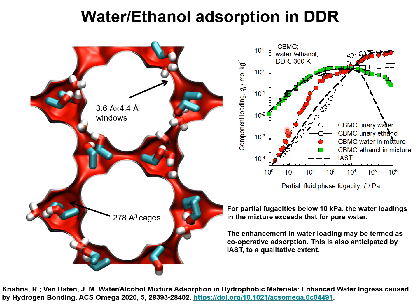The component loadings for mixture adsorption are shown by the filled symbols — red circles for water, green squares for ethanol. The open symbols are for the unary isotherms. We note that for partial fugacities in the bulk fluid phase lower than about 10 kilopascals, the ethanol loading in the mixture is practically the same as the ethanol loading for the pure component. On the other hand, the water loading in the mixture is significantly higher than the water loading for the pure component.